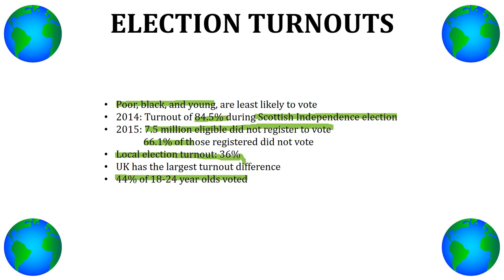If people are really interested in what's on offer in an election, they're most likely to vote because they want that outcome to happen. In this case, they wanted Scotland to be independent. In 2015, seven point five million people that were eligible didn't register to vote.